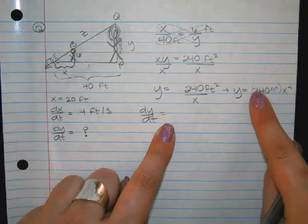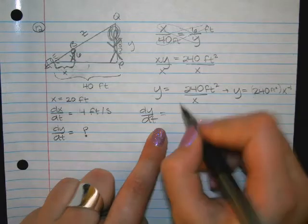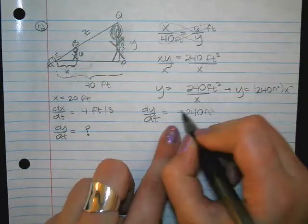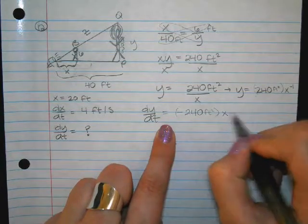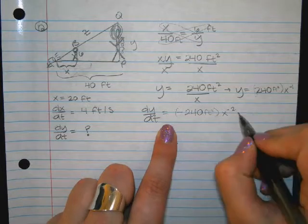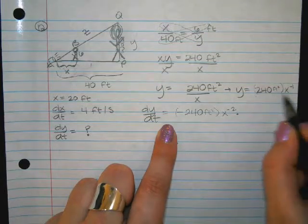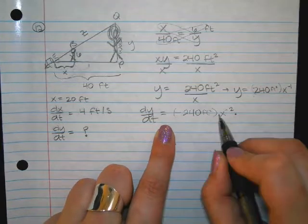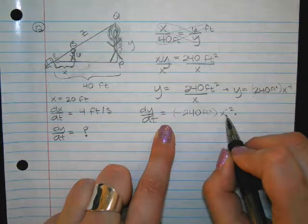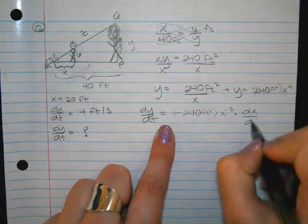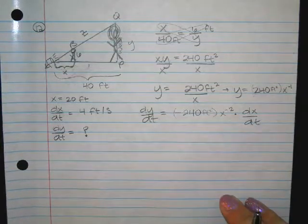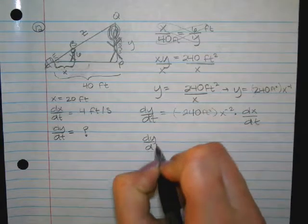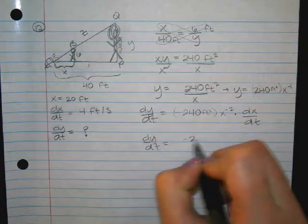Now if I do the derivative of this side, what do I get? You bring the negative one to the front, right? So negative 240, and we remember that 240 has a feet squared on it, X to the negative two, times, because it's a coefficient in front of X. So we just do the normal like power derivative of X is dx/dt.